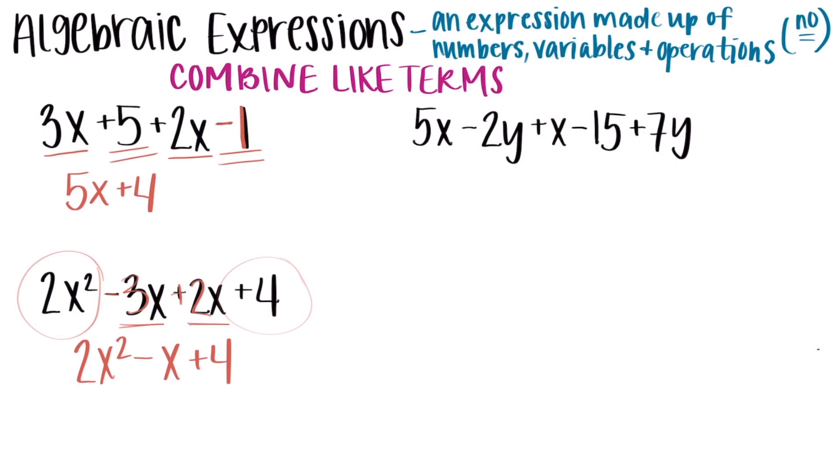And then my x squared does not have any other x squareds to combine with, so I'm just going to leave it as is. And my constant, my plus 4, also has nothing to combine with, so I'm going to leave it as is. And then in my third example, I also have three different terms. I have my x, I have my y, and then I have my constant. So starting with my x's, 5x plus x, that's like a plus 1x, imaginary 1's in front there, so those combined would be 6x.